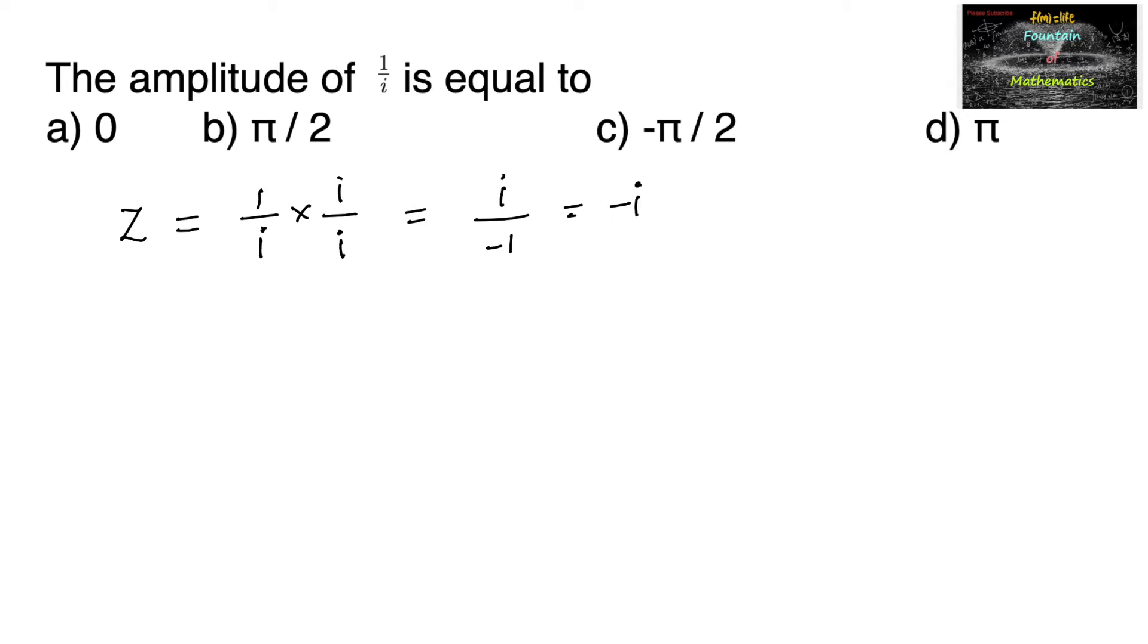We can clearly say that this negative i is nothing but 0 plus minus 1 i, that is 0 comma minus 1 is the point respective to this complex number. So 0 comma minus 1, negative i axis.